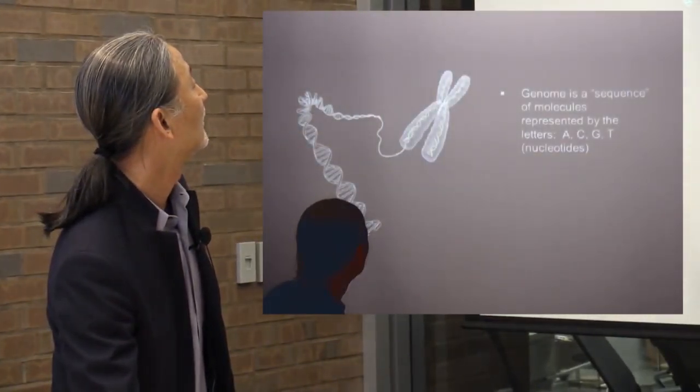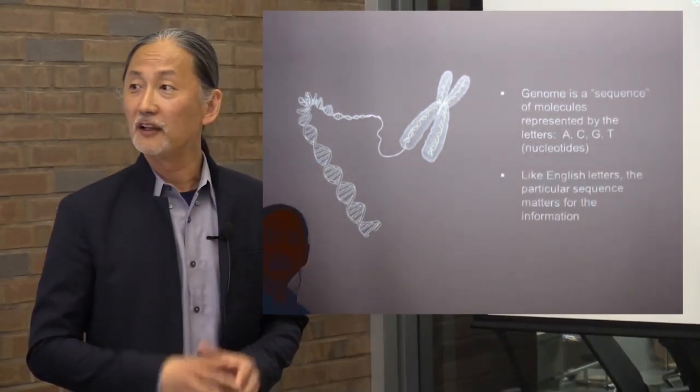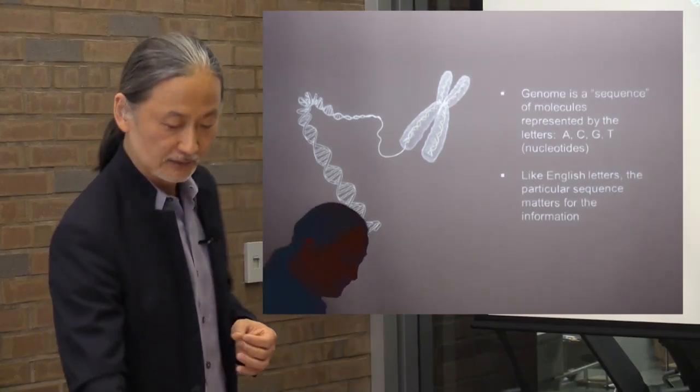Everything we're going to talk about today, we brought files on USB so you can take the PowerPoints and any of the exercise files we made so you may be able to use them in the classroom. So I'll just start out with some introductory slides. Of course, we all know that the genome is a string of DNA represented by the letters A, C, G, T — the nucleotides.